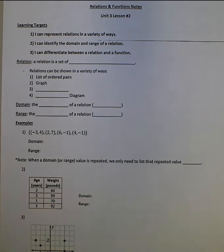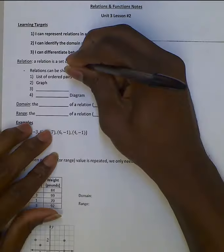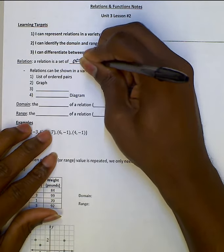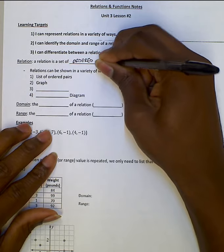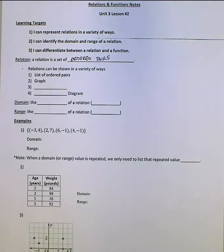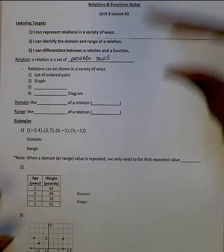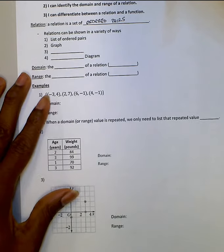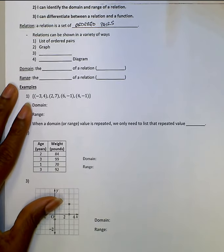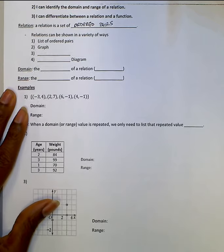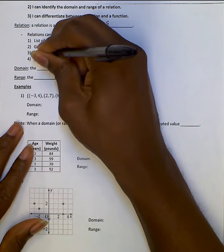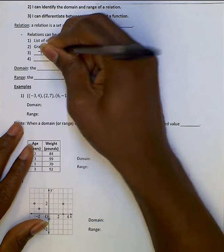So let's define relation. A relation is a set of ordered pairs. We can use it for graphing, but a relation is just the whole set of points that go together. We can show relations in a bunch of different ways: we can list them as ordered pairs, we can graph them, we can put them in a table, and we can see them in a mapping diagram.